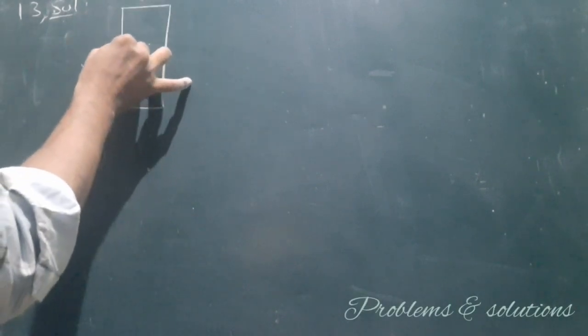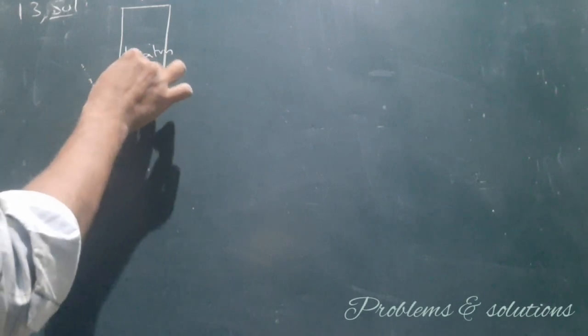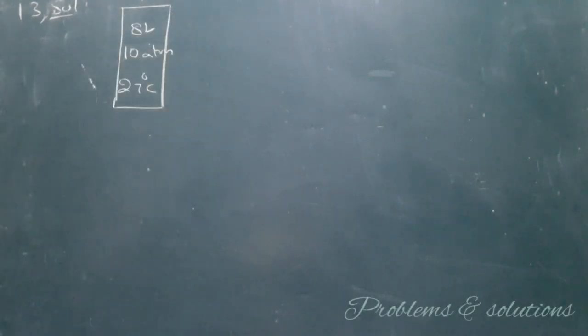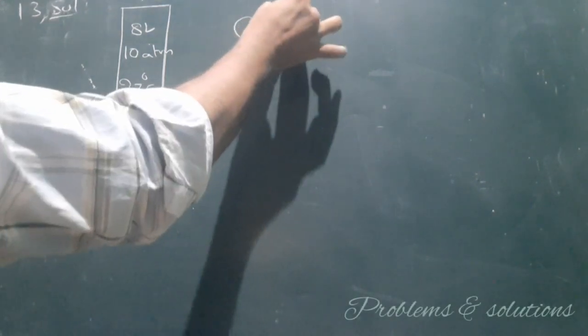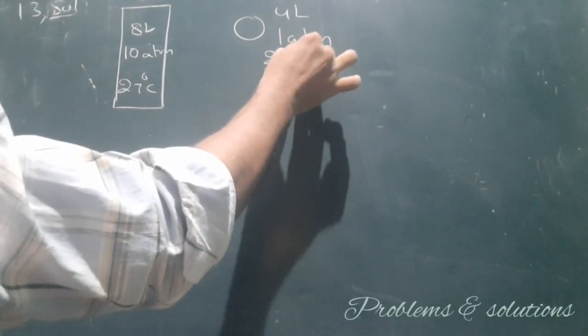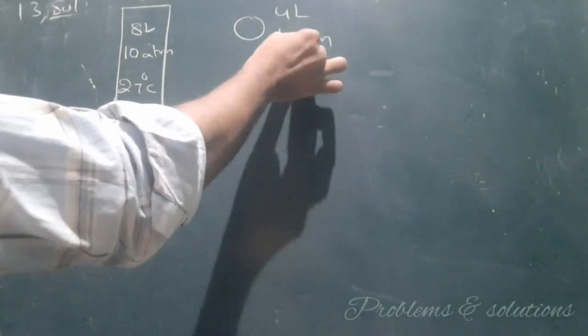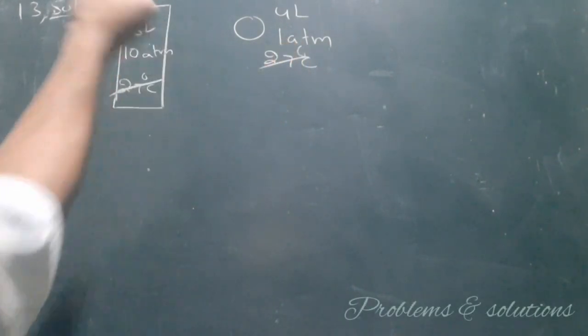In order to solve this problem, let us assume a cylinder which has hydrogen under 10 atmospheric pressure and 27 degrees centigrade. Its volume is 8 liters. And small balloons whose volume is 4 liters at 1 atmospheric pressure and 27 degrees centigrade. Here the temperature remains the same, so don't bother about the temperature. Let's focus on pressure and volume.